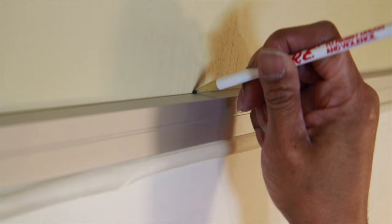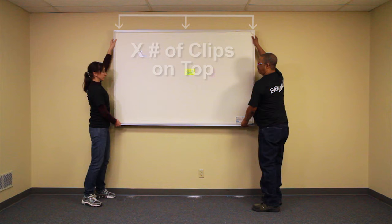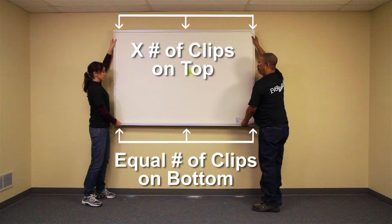Lift and place the board onto the bottom clips and mark the wall at the top of the board where you want your mounting clips located. The number of clips at the top should be the same as the number of clips at the bottom.